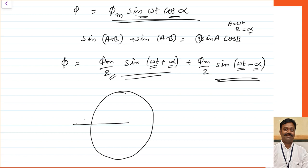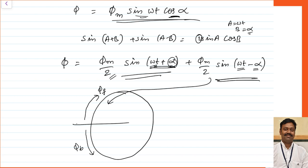The component (ωt + α) will be rotating in the forward direction — this is called the forward rotating magnetic field. The component (ωt − α), to compensate at every value of ωt, the maximum value moves in the decreasing alpha direction — this is called the backward rotating magnetic field. So whatever is your flux, it can be represented as the sum of two rotating magnetic fields, each having half the magnitude of the original flux wave, one rotating forward and one rotating backward.